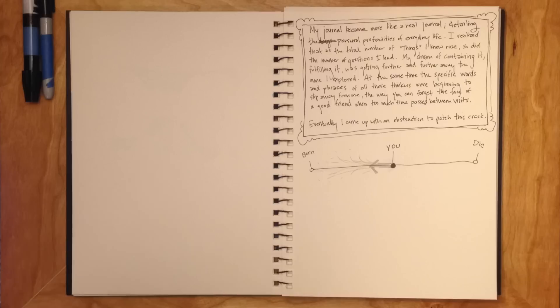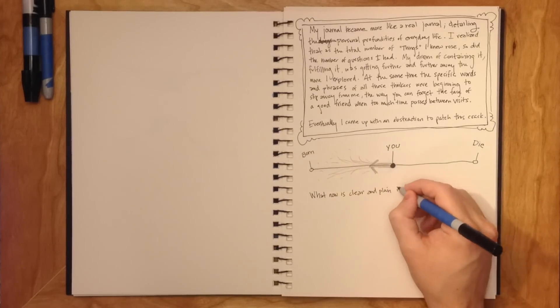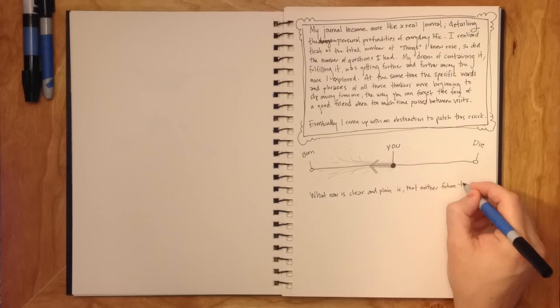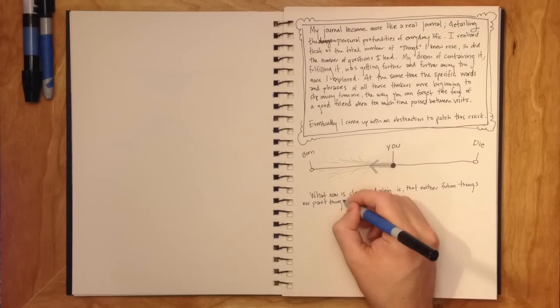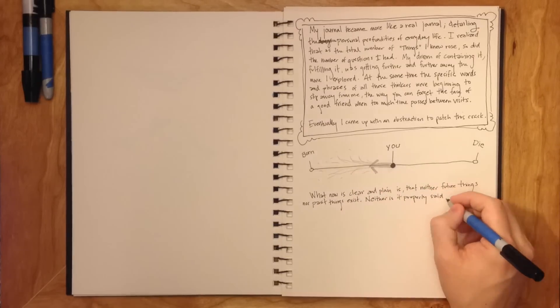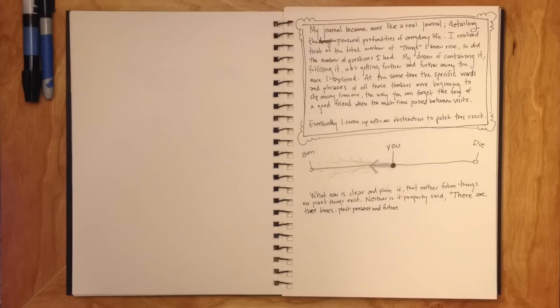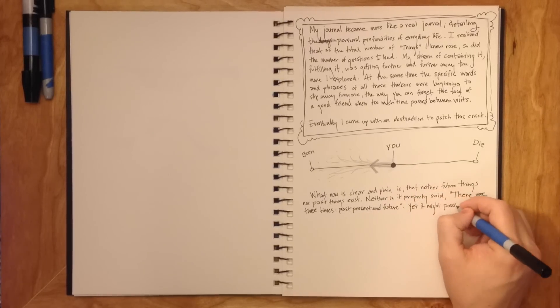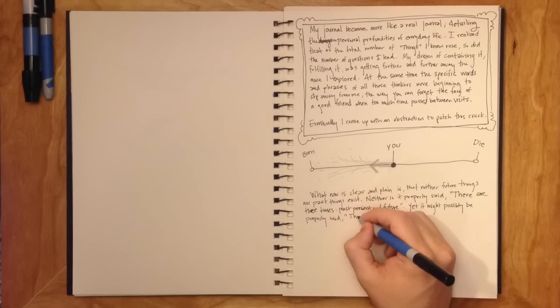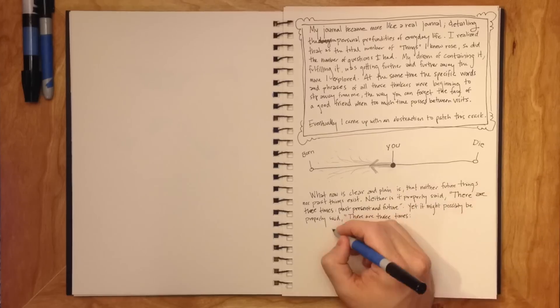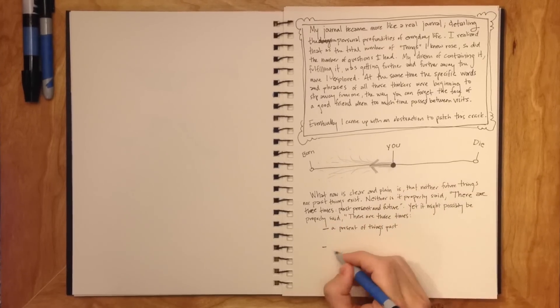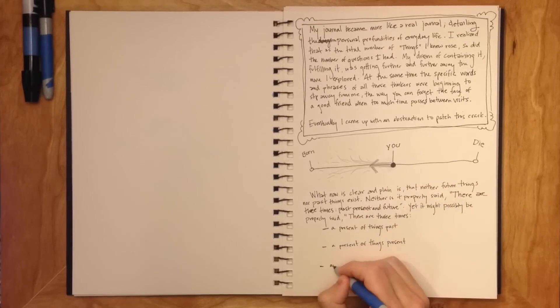He said, 'What now is clear and plain is that neither future things nor past things exist, nor is it properly said there are three times: past, present, and future. Yet it might possibly be properly said there are three times: a present of things past, a present of things present, and a present of things future.'